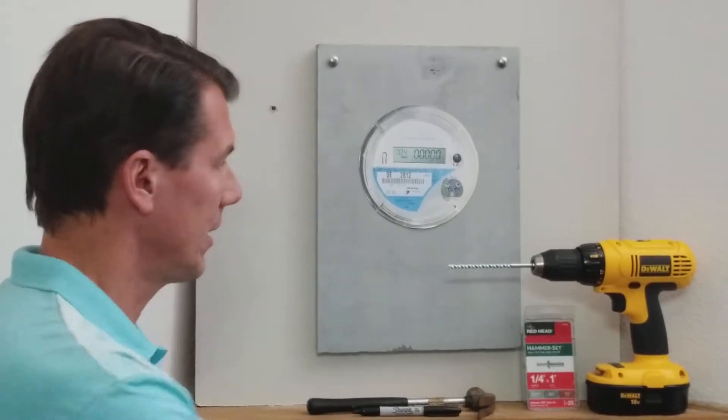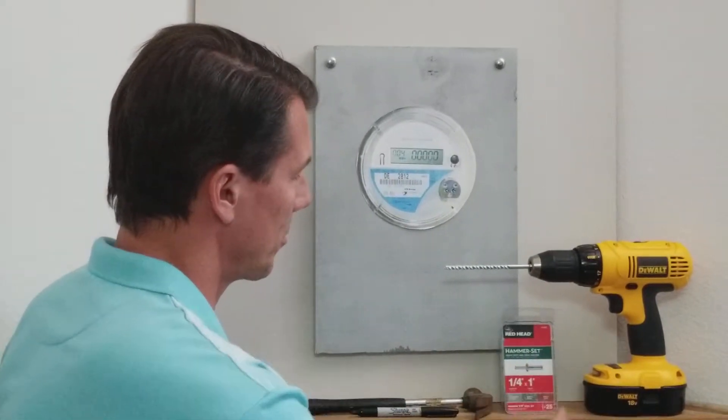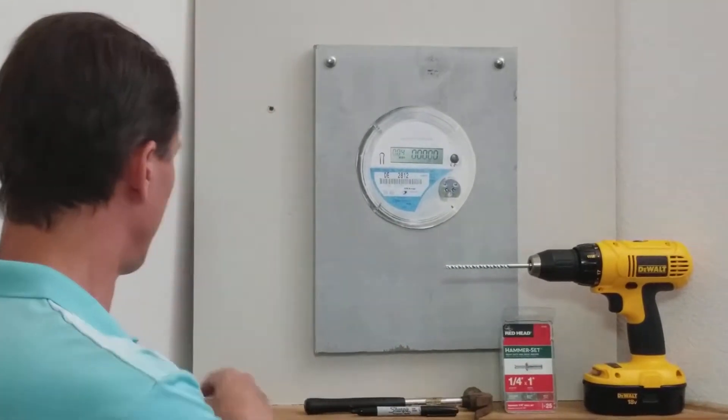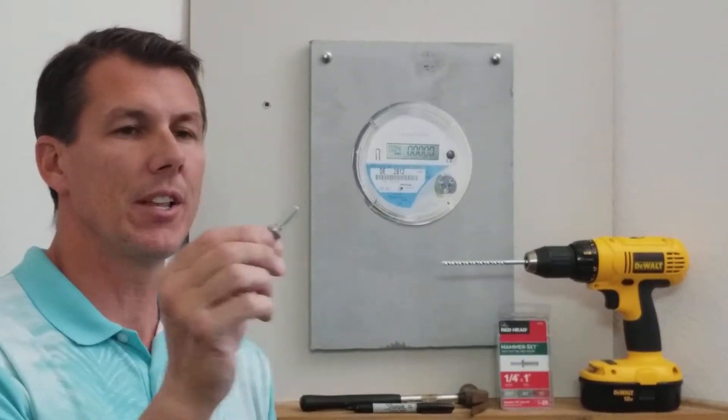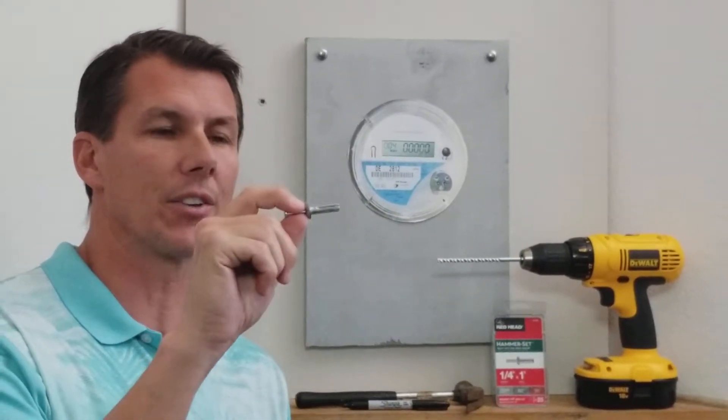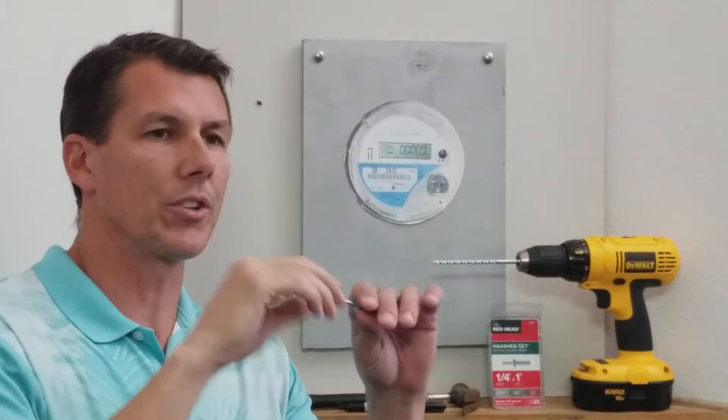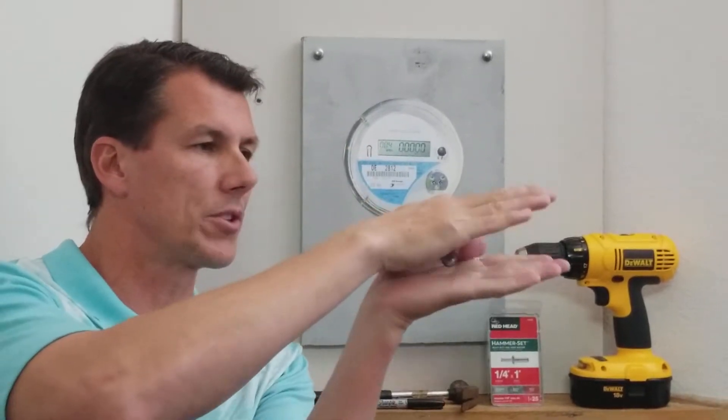The second thing you want is a one-quarter inch by one inch nail drive anchor. What we're using is from Home Depot, a quarter inch by one inch nail drive anchor. This is the type of thing that when you're in the house, it goes into the wall, and when the nail or screw goes in, it opens up so it's securing it into the wall really well.